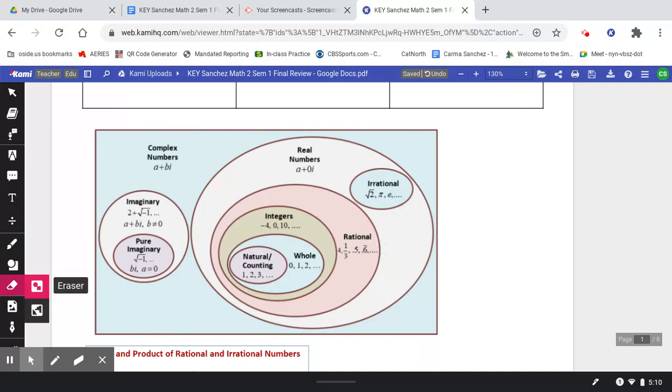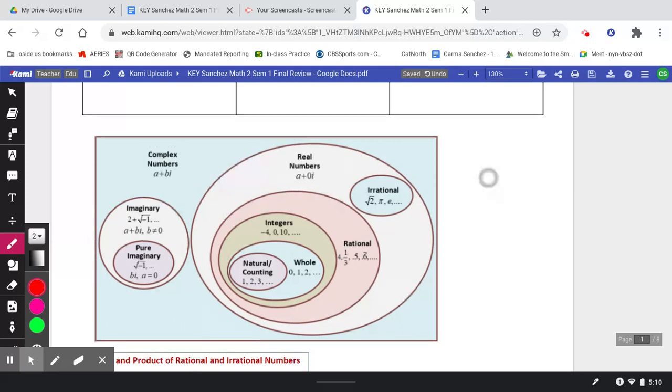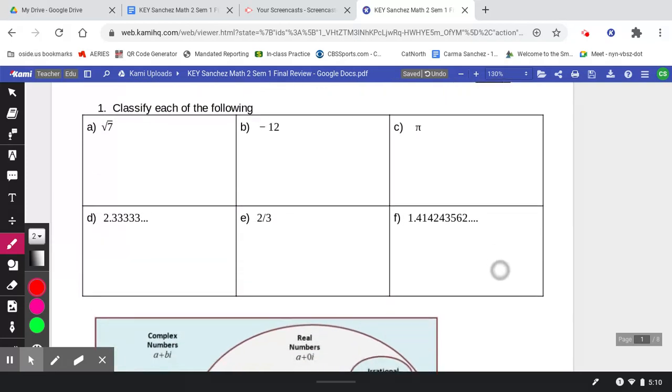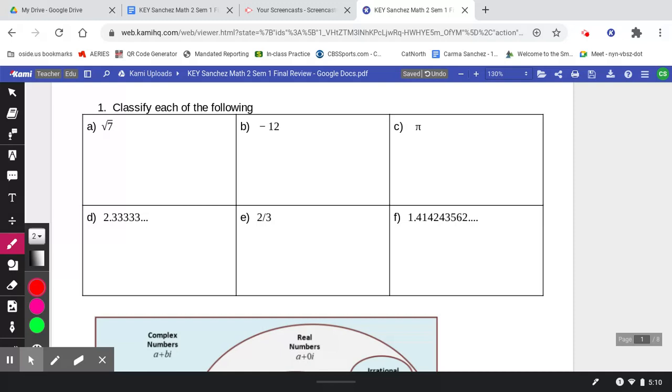So this is going to come up on the final, where we're going to give you a number and you're going to classify it within this number system. So let's go up and look at what options we have here. For example, the square root of 7, if I look down here at where it falls in between,